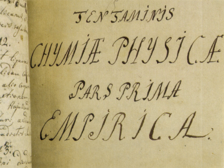The term 'physical chemistry' was coined by Mikhail Lomonosov in 1752, when he presented a lecture course entitled 'A Course in True Physical Chemistry' before the students of Petersburg University. In the preamble to these lectures he gives the definition: 'Physical chemistry is the science that must explain under provisions of physical experiments the reason for what is happening in complex bodies through chemical operations.' Modern physical chemistry originated in the 1860s to 1880s with work on chemical thermodynamics, electrolytes in solutions, chemical kinetics and other subjects.